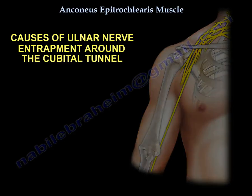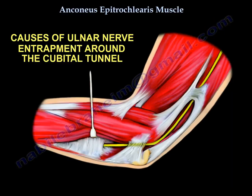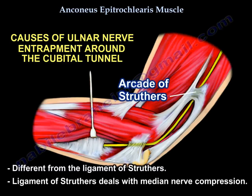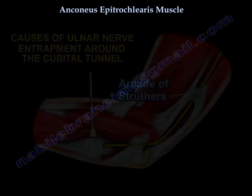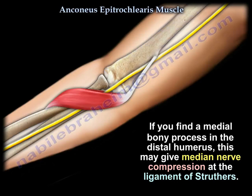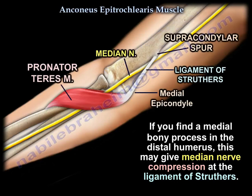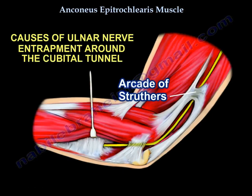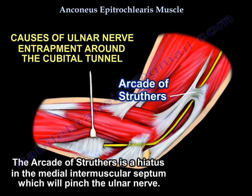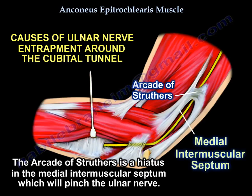Other causes of ulnar nerve entrapment around the cubital tunnel include the arcade of Struthers, which is different from the ligament of Struthers. The ligament of Struthers is associated with median nerve compression — if a medial bony process is found in the distal humerus, this may cause median nerve compression at the ligament of Struthers. The arcade of Struthers, on the other hand, is a hiatus in the medial intramuscular septum and will compress the ulnar nerve.